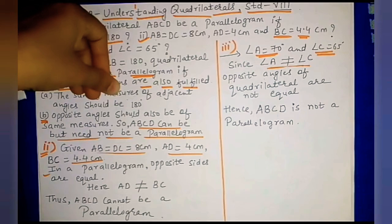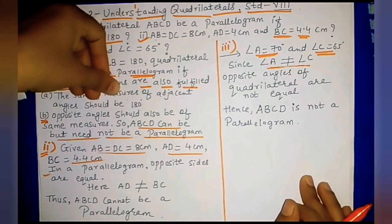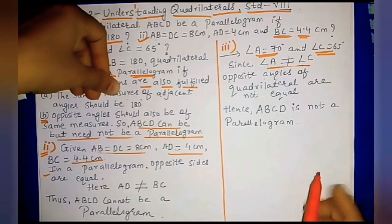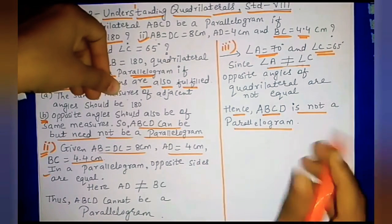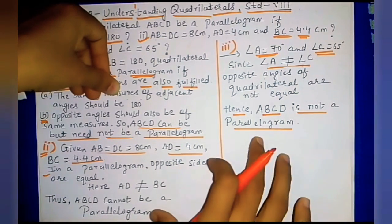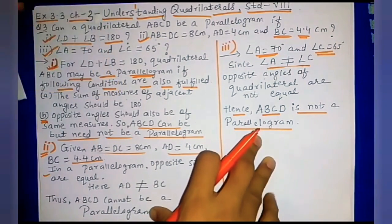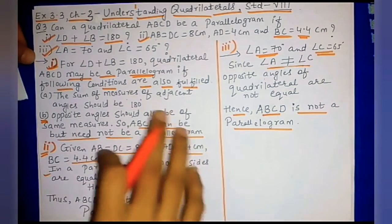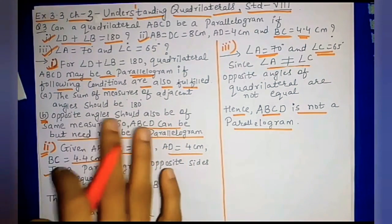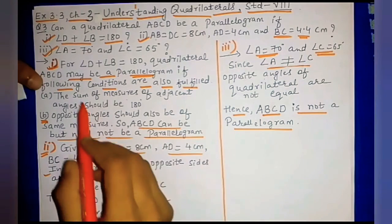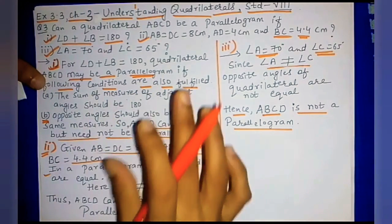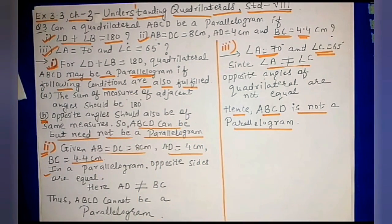Since angle A is not equal to angle C, ABCD is not a parallelogram. To summarize: in the second and third conditions it is not a parallelogram. In the first condition, it may or may not be a parallelogram. This completes the explanation for question number 3.